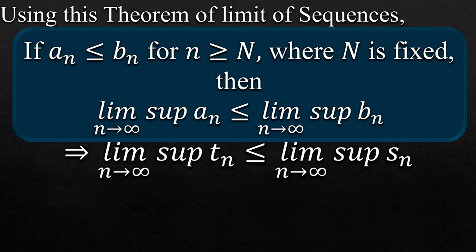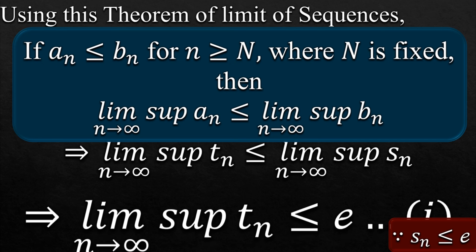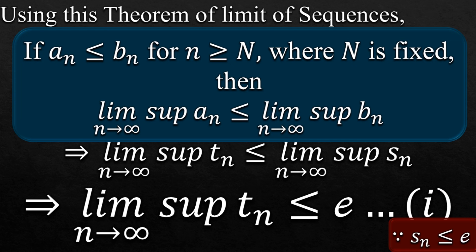So by applying this theorem on Tn and Sn, as we know Tn is less than or equal to Sn, this implies their supremum with limit tends to infinity also has the same relationship. Also we know from earlier that Sn is less than or equal to e. So this implies that lim sup Tn is less than or equal to e, and we call it equation number 1 and put it aside for later use.